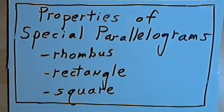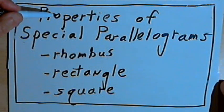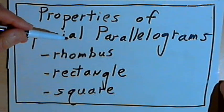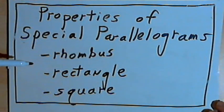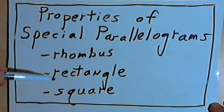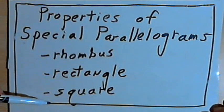This video is provided as supplementary material for courses taught at Howard Community College. In this video I'm going to talk about the properties of special parallelograms — specifically the rhombus, the rectangle, and the square.